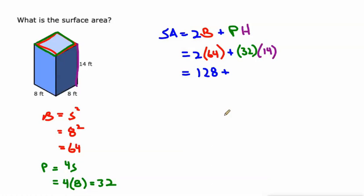Two times 64, the two bases together have an area of 128. And then 32 times 14, that's 448. The other four sides together, their surface area is 448. We add 128 to that, we get 576 square feet.